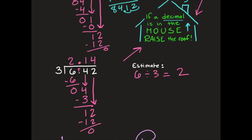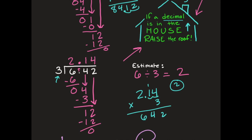My answer is 2 and 14 hundredths. To check my work, I'll take my quotient and multiply it by the divisor — this is good practice for multiplying with decimals too. I have two decimal places. Three times 4 is 12, 3 times 1 is 3 plus 1 is 4, 3 times 2 is 6. Placing the decimal two spots in gives 6 and 42 hundredths — the same as my dividend. I am correct.